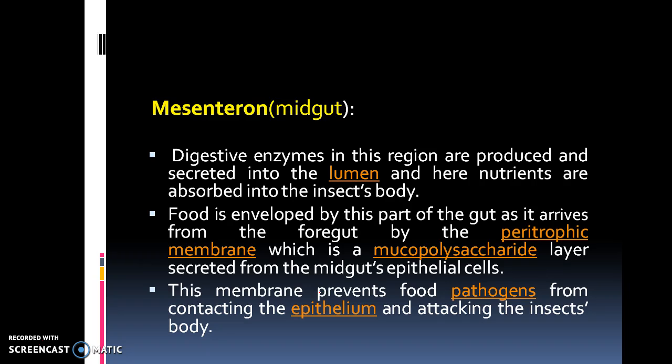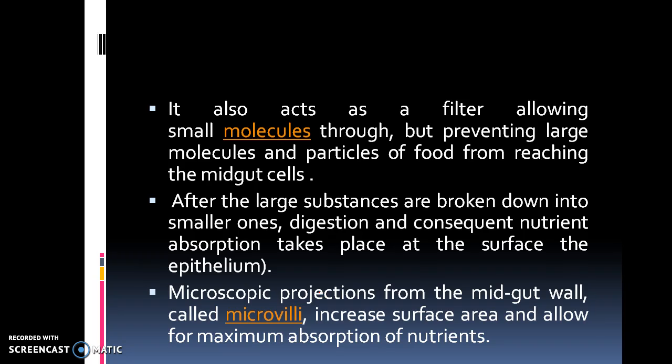The next part of the alimentary canal is the mesenteron, or midgut. Here, digestive enzymes are produced and secreted into the lumen, and nutrients are absorbed into the insect's body. Food is enveloped as it arrives from the foregut by the peritrophic membrane, which is a mucopolysaccharide layer secreted from the midgut's epithelial cells. This membrane prevents food pathogens from contacting the epithelium and attacking the insect's body. It also acts as a filter, allowing small molecules through but preventing large molecules and particles of food from reaching the midgut cells. After large substances are broken down into smaller ones, digestion and consequent nutrient absorption takes place at the surface epithelium.